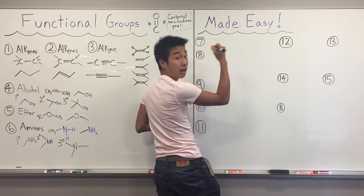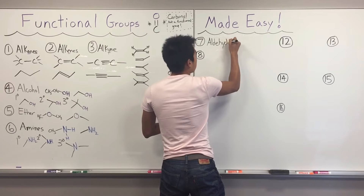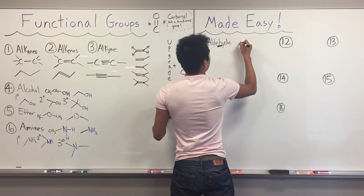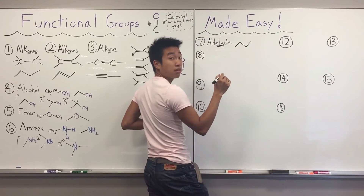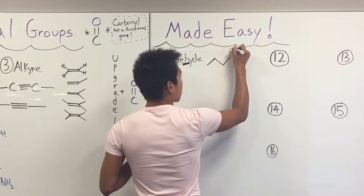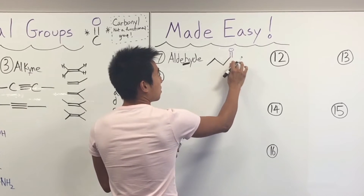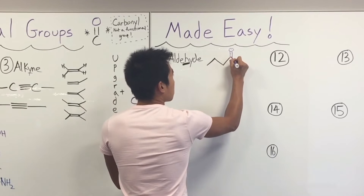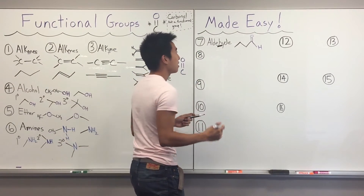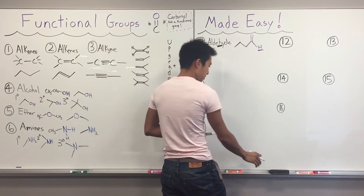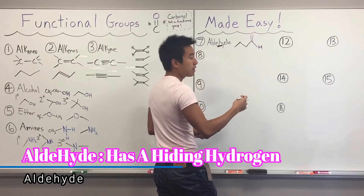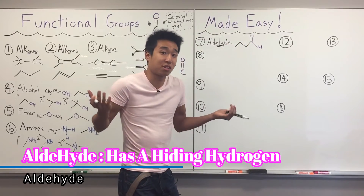First, let's start with the aldehyde. Take an alkane and at the very end of the chain, upgrade that terminal carbon with a carbonyl. There's a hydrogen attached to that terminal carbonyl carbon. That's how I remember aldehyde — there's an H that's hiding on your structure. In bond line form, you see a carbonyl at the end of a chain with a hydrogen there. That H is the key identifier.